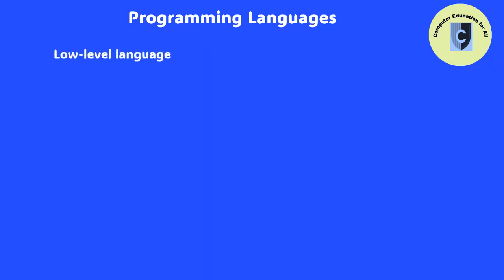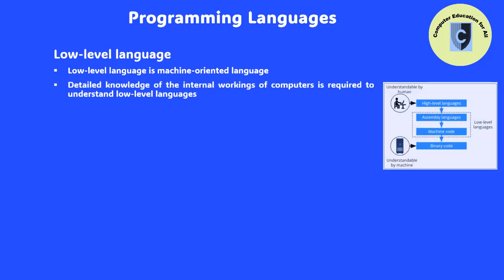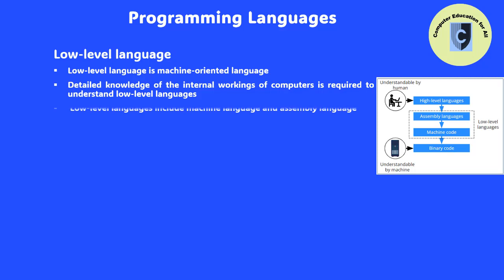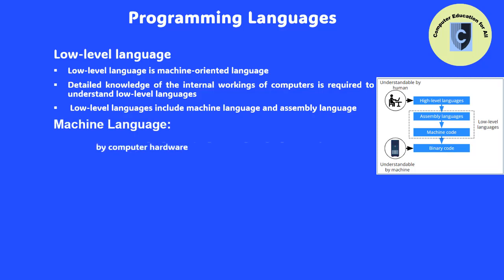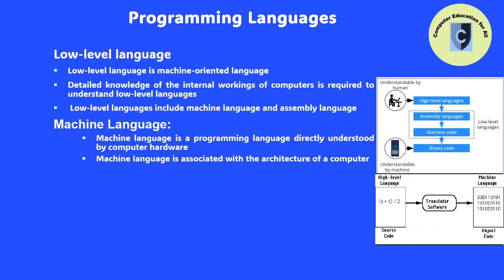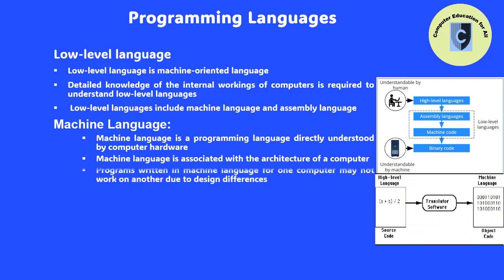Low-level language is a machine-oriented language. To understand low-level language, detailed knowledge of the internal working of a computer is required. Low-level languages include machine language and assembly language. Machine language is a programming language that is directly understood by computer hardware. Machine language is associated with the architecture of the computer. Therefore, programs written in machine language for one computer will not work on another because of design differences.